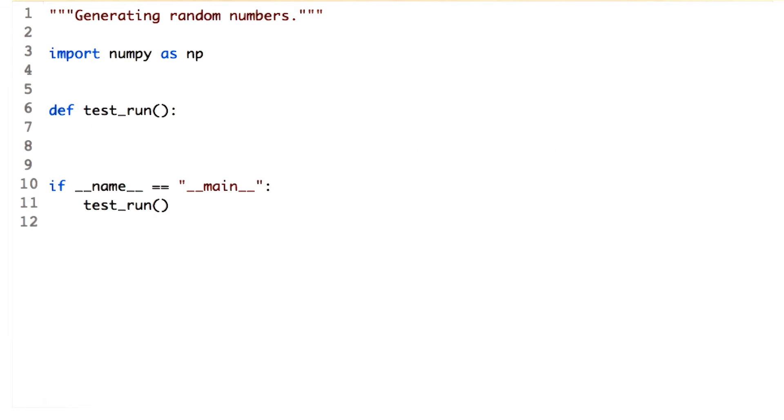Both rand and random sample uniformly from the range 0 and 1. What if you wanted to sample from a different distribution? To sample from a Gaussian or normal distribution, we can use the normal function.